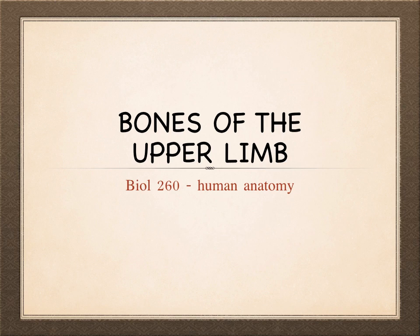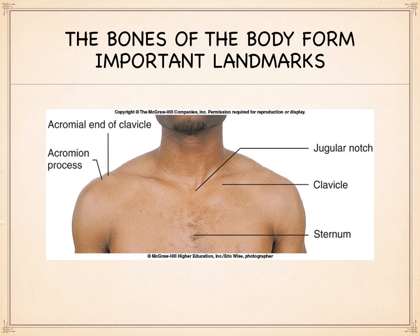Let's address the bones of the upper limb. We're going to study the bones of the upper limb and their various features. The first thing we always need to remember as we approach the bones is that, at least from a medical standpoint, the bones are very important landmarks — physical landmarks — to identify and locate other soft tissues in the human body. We often use bony landmarks to locate nerves, blood vessels, or other structures.